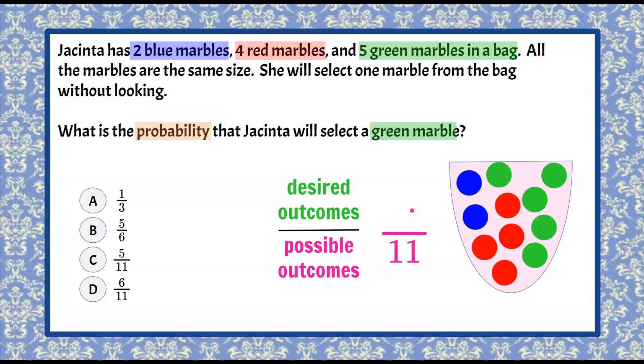Now let's talk about our numerator of our ratio, which is our desired outcomes. Our desired outcome is that we're going to get a green marble. So when we think about that, we're going to know that we have five green marbles in the bag.